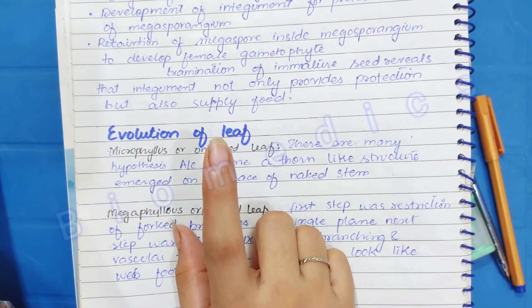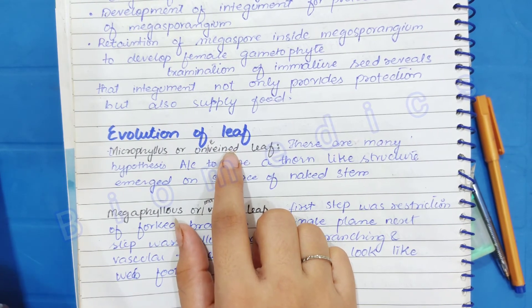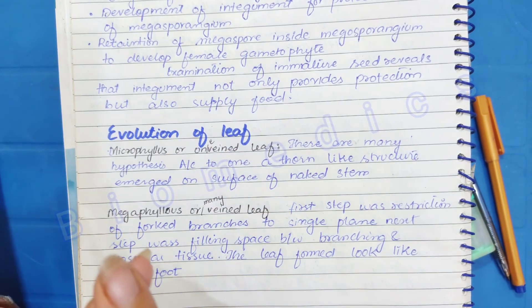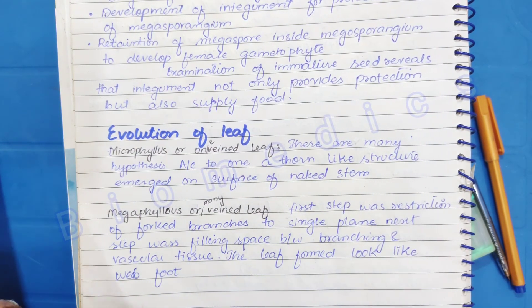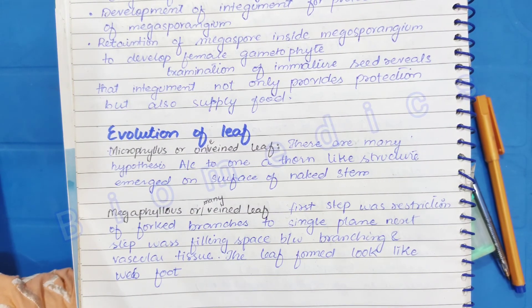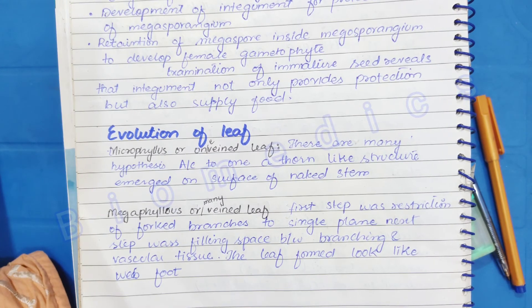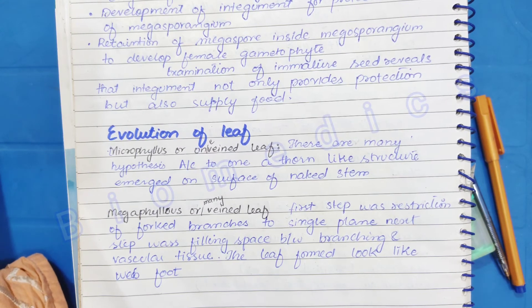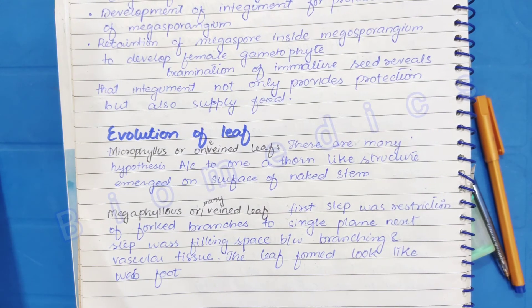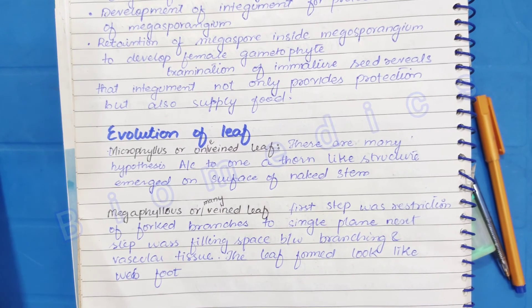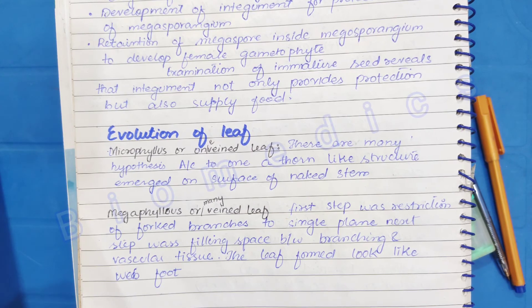The second part is the evolution of leaf. There are two types of leaves: microphyllous and megaphyllous. In microphyllous leaves there is one vein. In megaphyllous leaves there are more veins. If we talk about microphyllous leaves, there is a simple hypothesis — a thorn-like structure emerges from the naked stem. This thorn-like structure contains some tissues and a vascularized tissue. Later, it is transformed into a leaf.